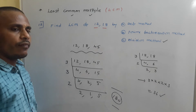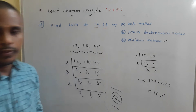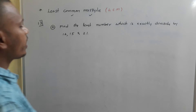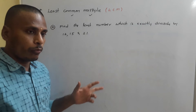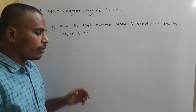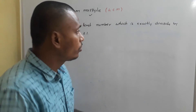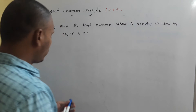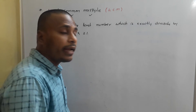Now the problem: find the least number which is exactly divisible by 12, 15, and 21. In the last class we learned similar problems for HCF, and now we solve problems related to LCM. Read the problem: find the least number which is exactly divisible by 12.